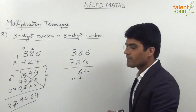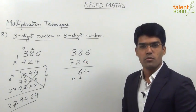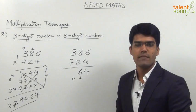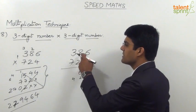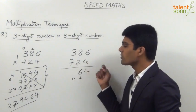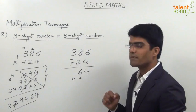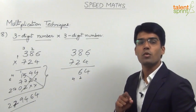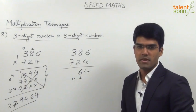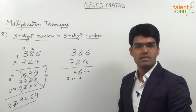3 into 4 is 12, 7 into 6 is 42, 12 plus 42 is 54, and 8 into 2 is 16. 54 plus 16 is 70. With 4 as the carry, 70 plus 4 is 74, so we take 4 in the answer and 7 gets carried forward. That is how we finish the third step.